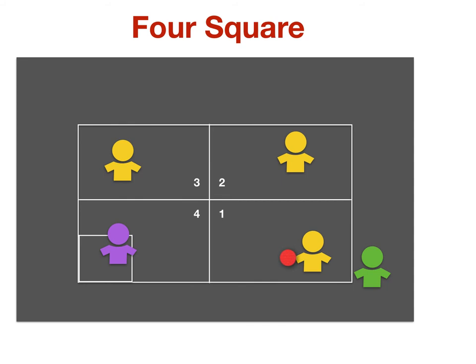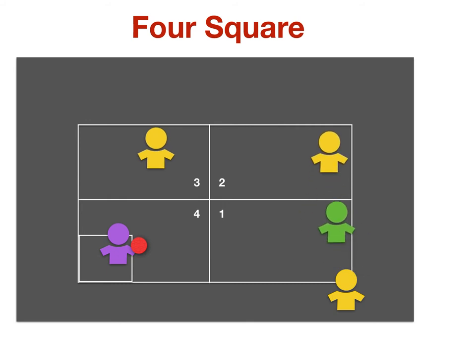So here's a rotation now that player three is out. Three goes out of bounds and gets in line to come back in, while player two moves up to square three, and the player in square one moves up to square two, and the person waiting comes in to court one, in this case the person in green.